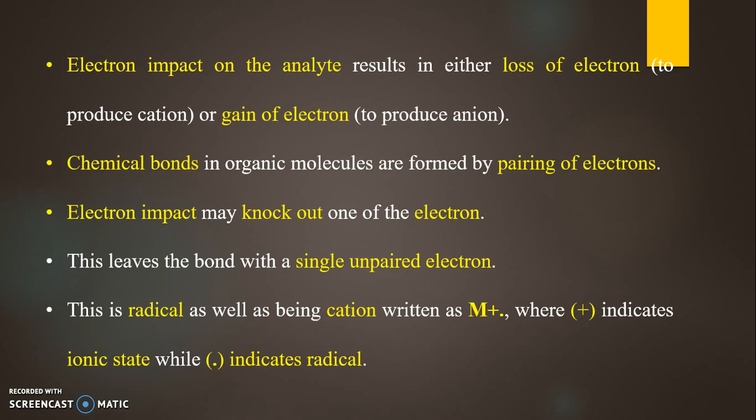The potential between C and B is small and it should be sufficient only to remove the positive ions from the electron beam. Now in this way the positive ions will pass through slit D with variable but small kinetic energy.